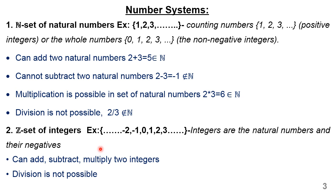The set of integers consists of both positive as well as negative numbers. In this case, I can add two integers or I can subtract two integers, because negative integers are allowed here. I can also multiply two integers. Only one operation is not possible — that is division — because when I take two by three, I get a fractional value that is not a member of the set of integers Z.